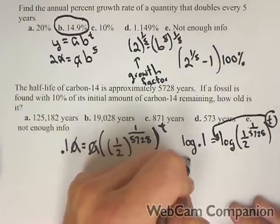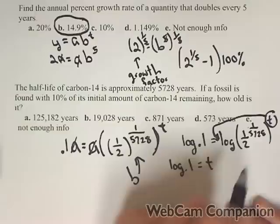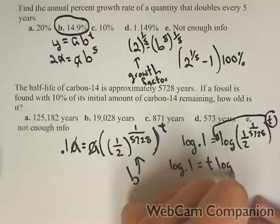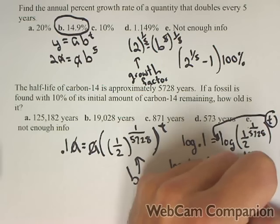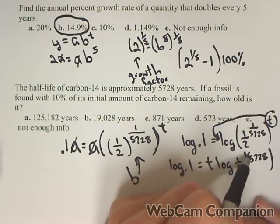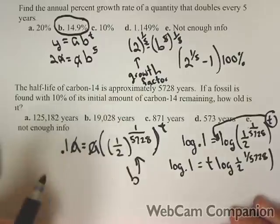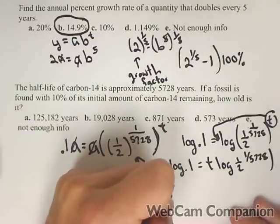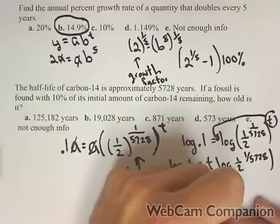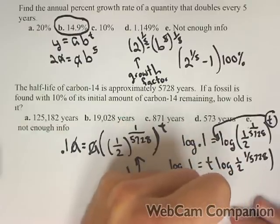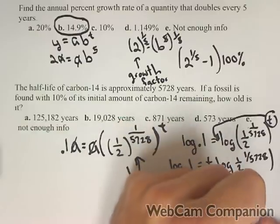So I have log(0.1) = t × log((1/2)^(1/5728)). We also could pull this exponent out front, so let's go ahead and do that. We have log(0.1) equals, I'm just going to write it, we're going to multiply them together, so we'll have (t/5728) × log(1/2).